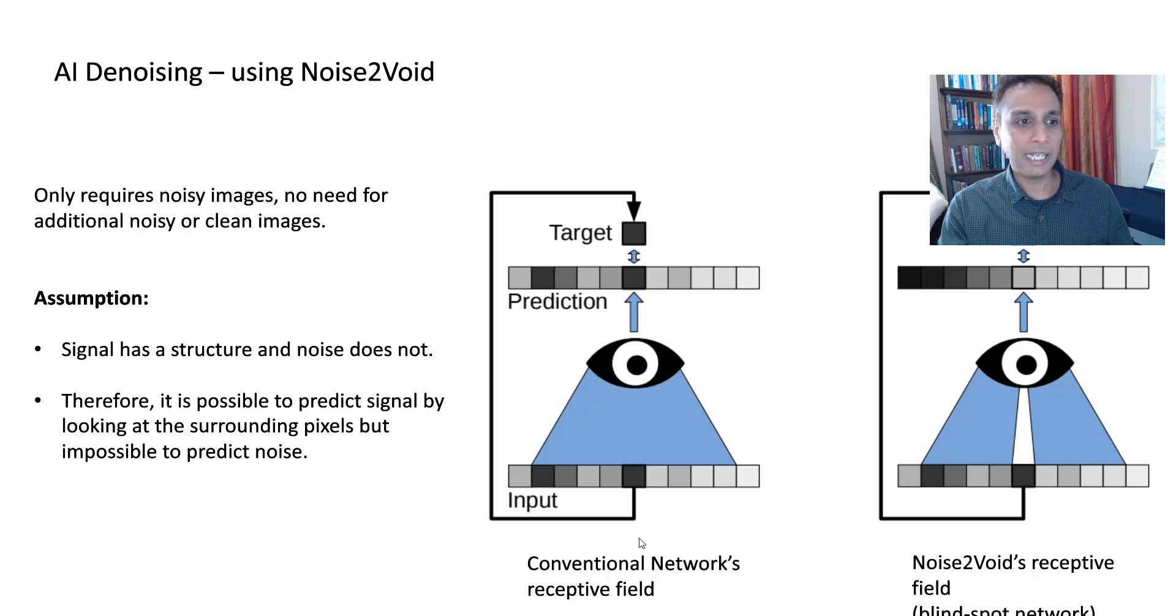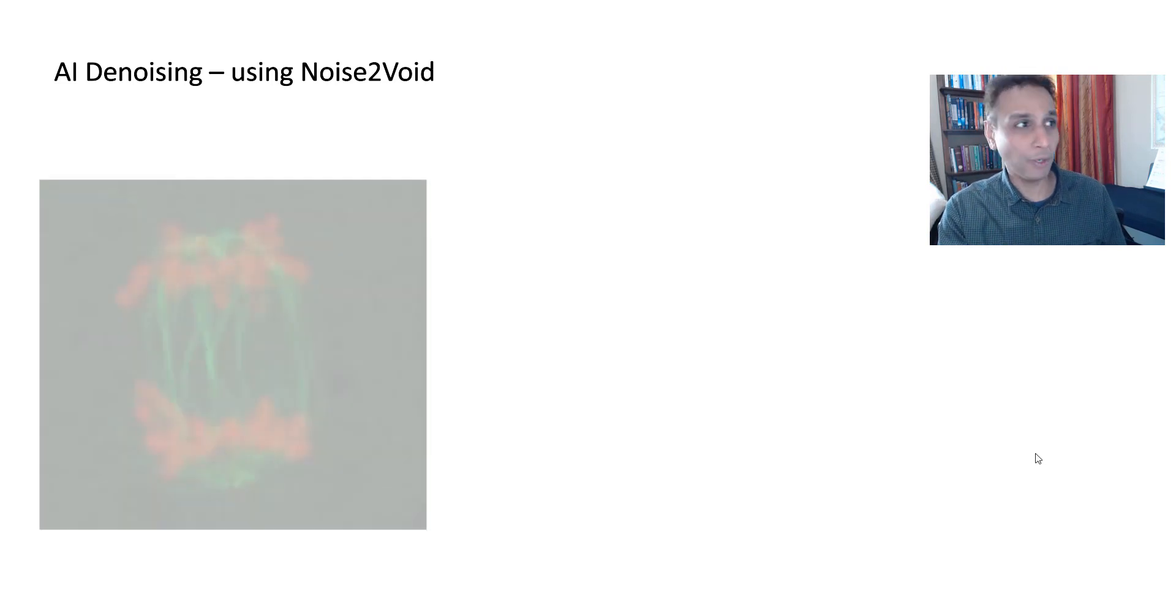That's because the assumption is that the noise cannot be predicted by looking at the neighborhood pixels, whereas the structure can be predicted by looking at the neighborhood pixels. So that's the basic premise. And based on that, it relies on a network with a blind spot. What does that mean? Well, if you have a patch, an image patch, and when you're doing a conventional normal neural network, then your target, you are looking at the entire input, like this entire patch in the receptive field. I have a graphic to further explain this, so don't worry if you don't get it right now, but look at the central pixel right here. The central pixel is also included as part of your target and prediction, but if you look at Noise2Void's receptive field, this central pixel is not included. It's blinded when the network is looking at that patch.